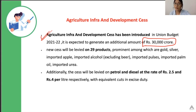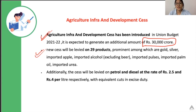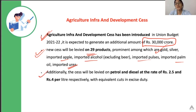The Cess will be levied on 29 products. The prominent among them are gold, silver, imported apple, imported alcohol, imported pulses, imported palm oil, and imported urea. All these products are imported, so a Cess will be levied and taxed on them. Additionally, the Cess would also be levied on petrol and diesel — petrol at Rs. 2.5 per liter and diesel at Rs. 4 per liter.